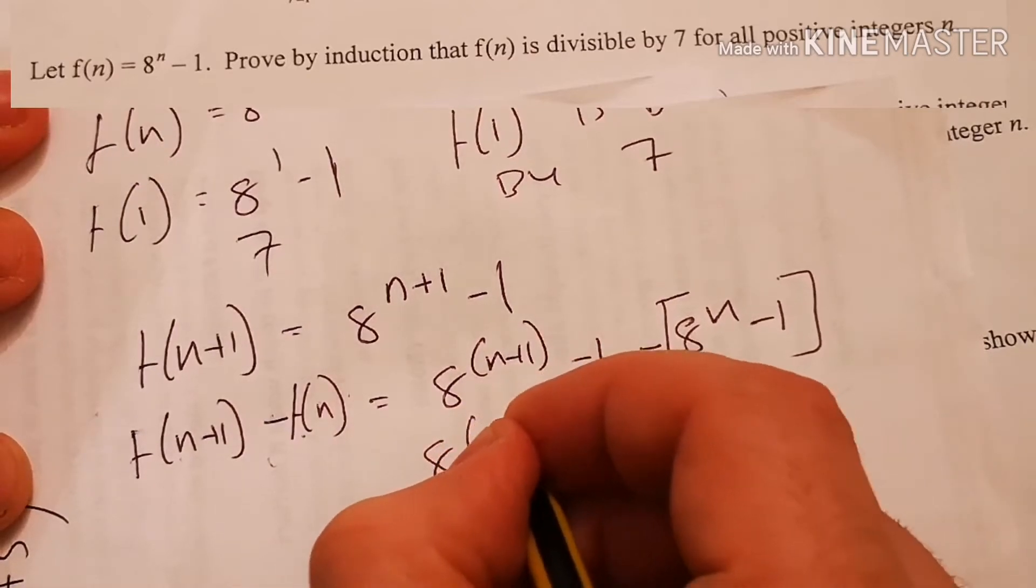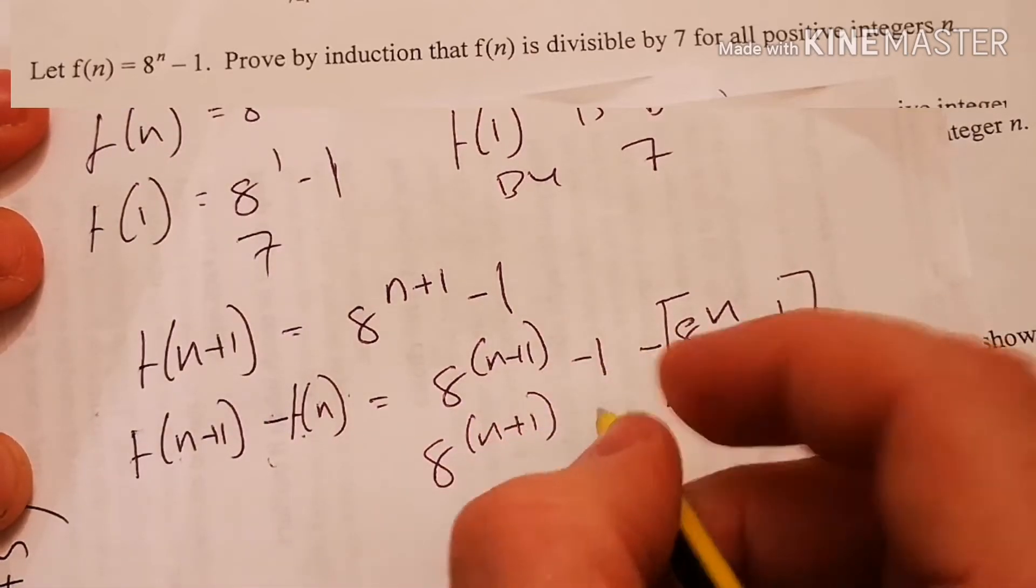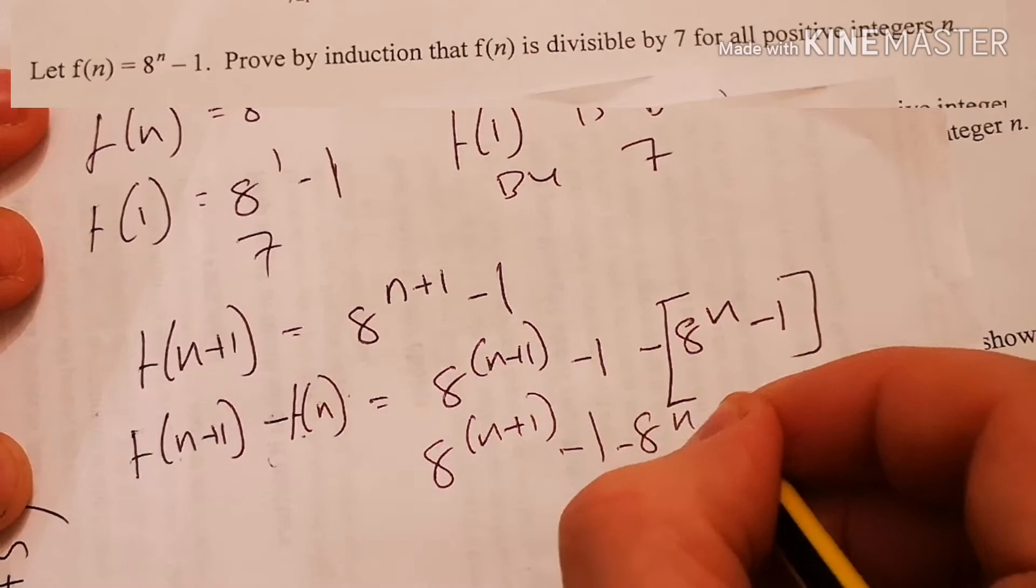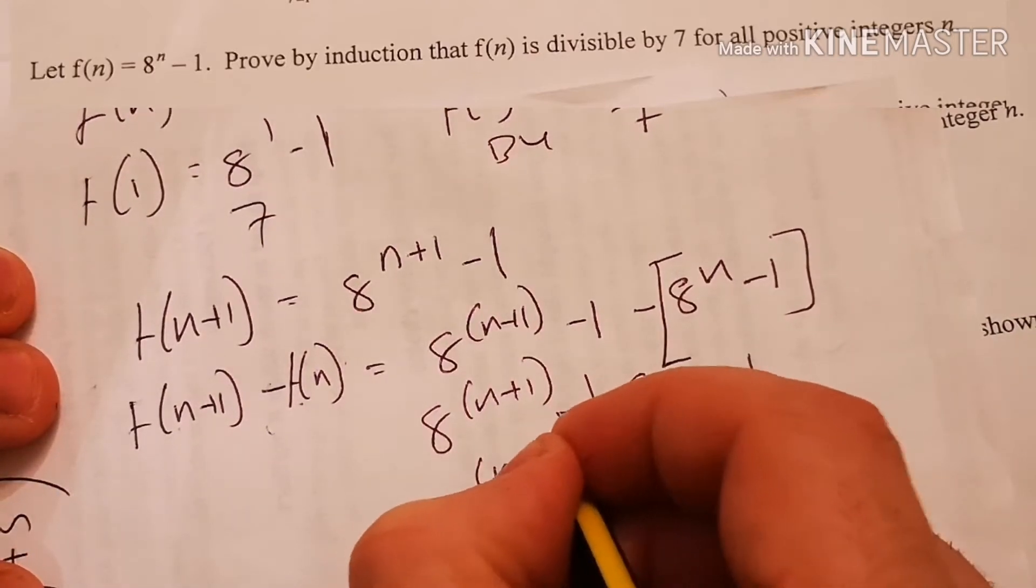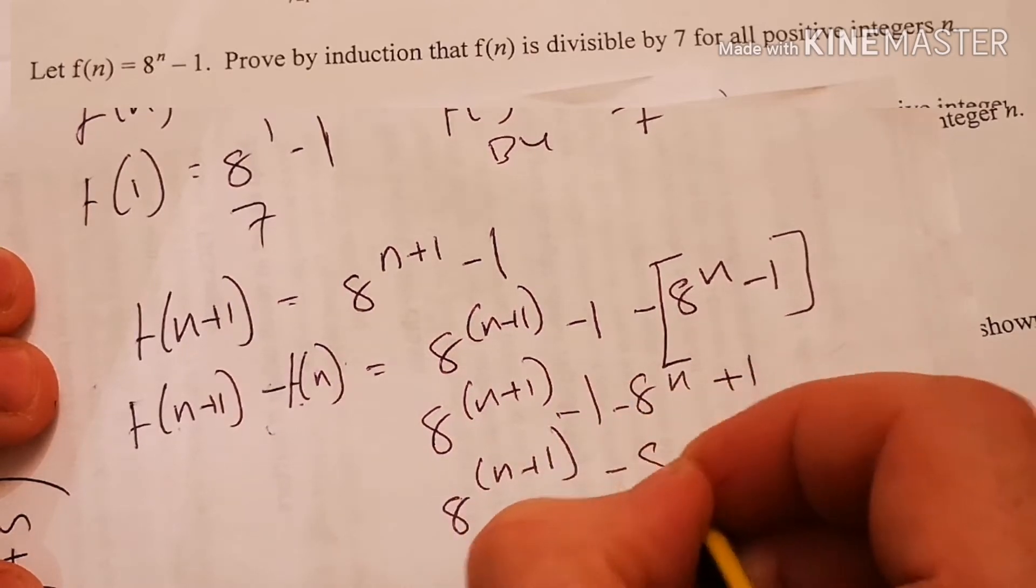8^(n+1) minus 1 minus 8^n plus 1, these cancel out, so I'm going to say 8^(n+1) minus 8^n.